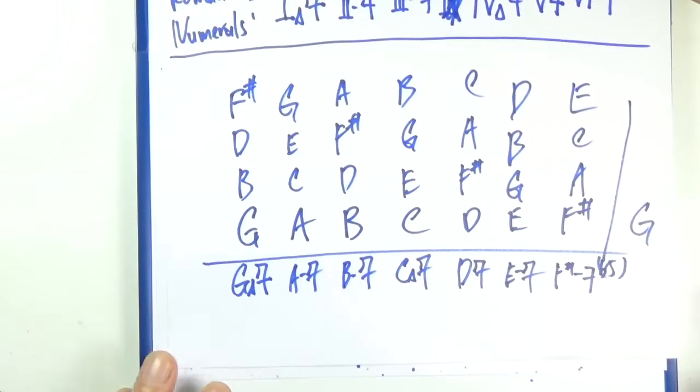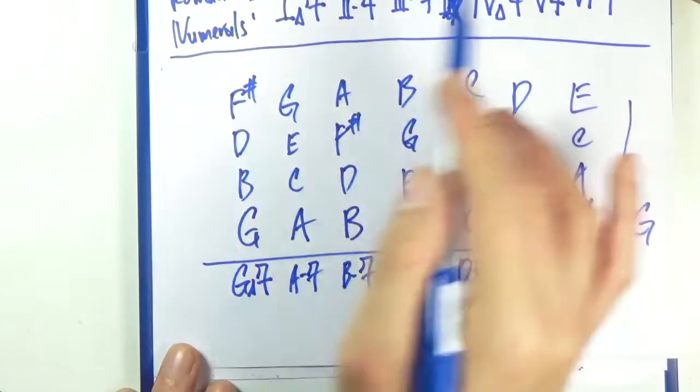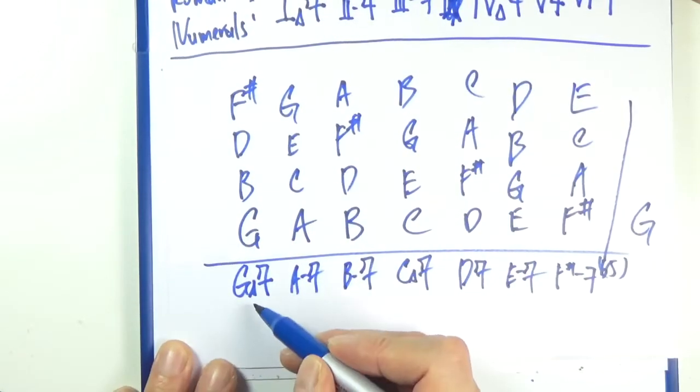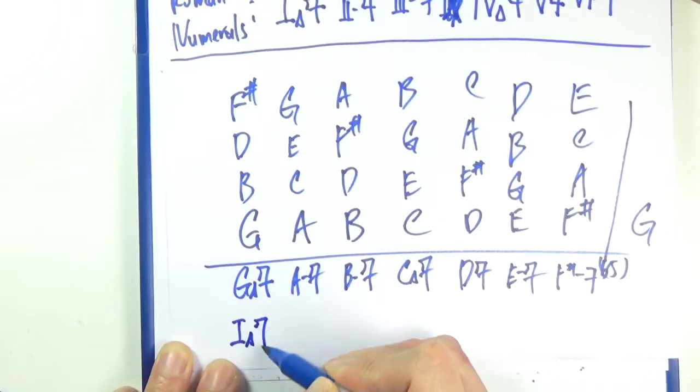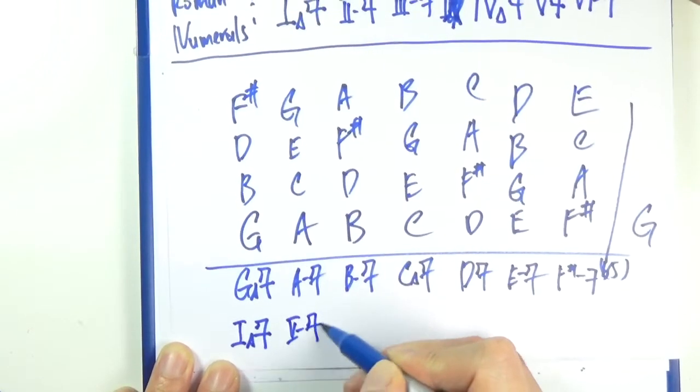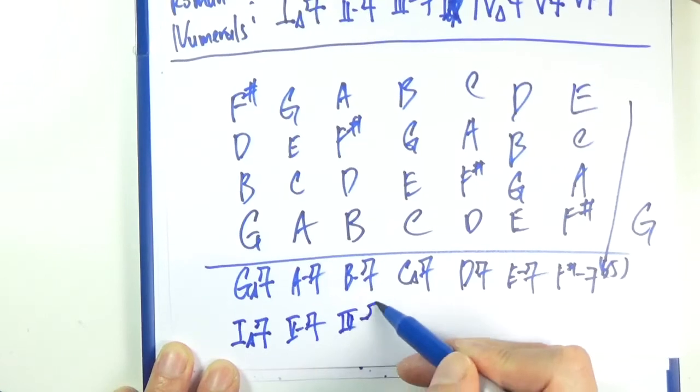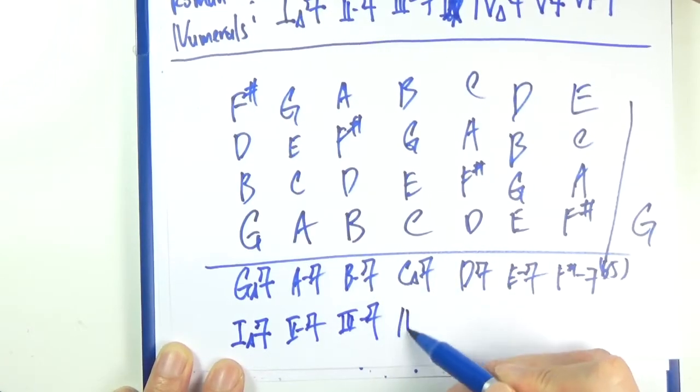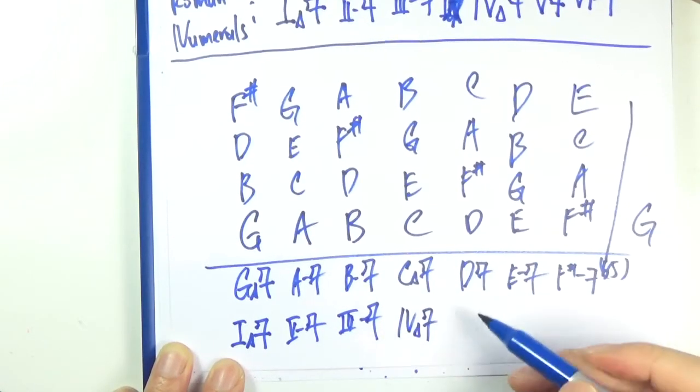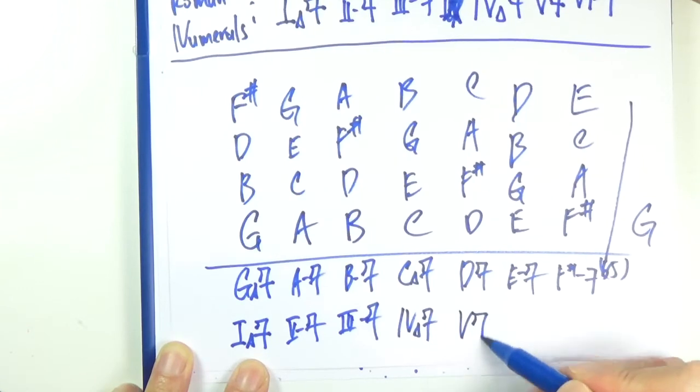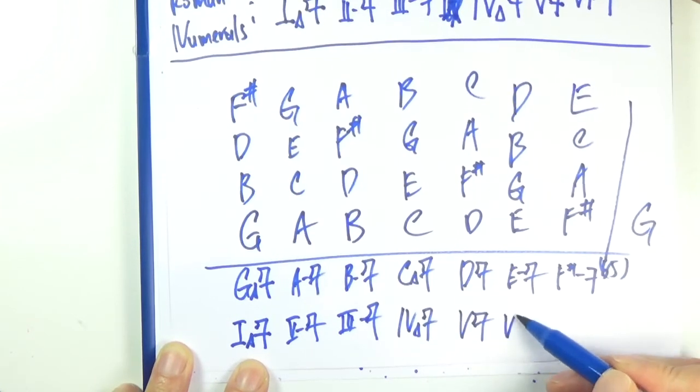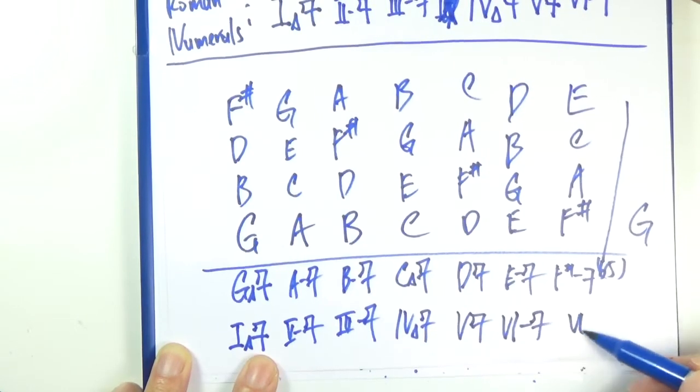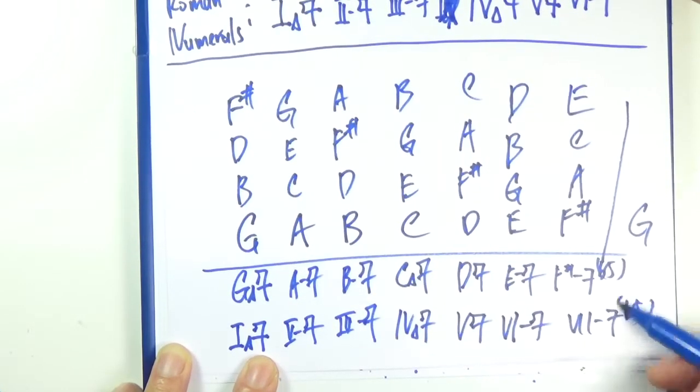Again, Roman numerals - it should appear the same, but let's check our work anyway. That should be a one major seven, a two minor seven, a three minor seven, this one is a four major seven, five seven, six minor seven, and then that should be a seven minor seven flat five.